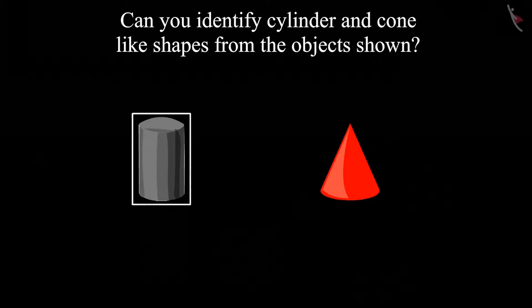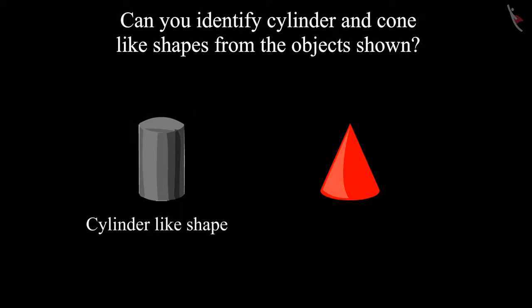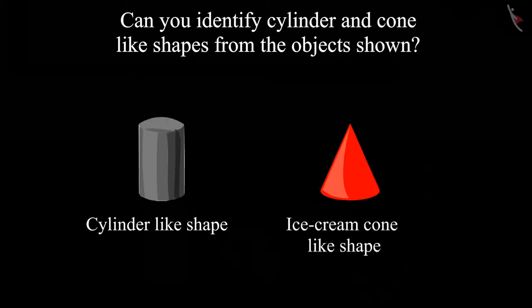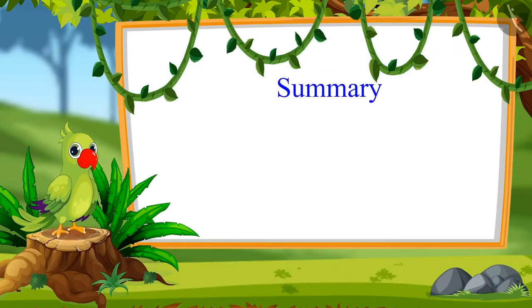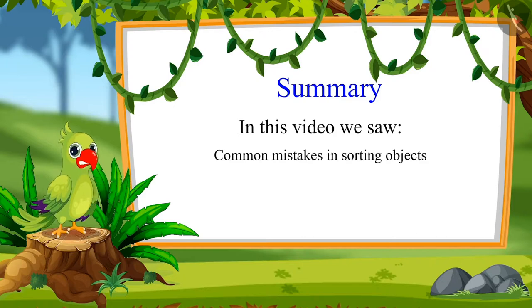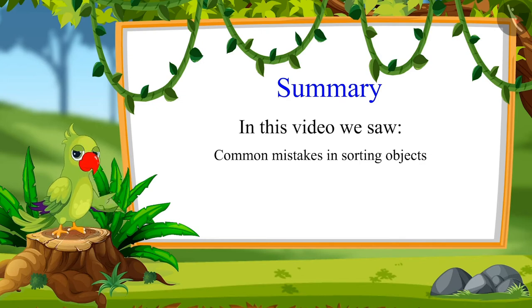As you have seen, the cylinder like shape is round on both sides, but the cone like shape is round on one side and pointed on the other side. So that was all for today. In this video we all saw the common mistakes in sorting objects. I hope you have understood this topic properly. Bye, children!